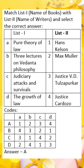Legal norms derive their validity from a higher norm. Kelsen argued that a legal norm is valid only if it is authorized by a higher norm. This means that the validity of a legal norm can be traced back to the grand norm.